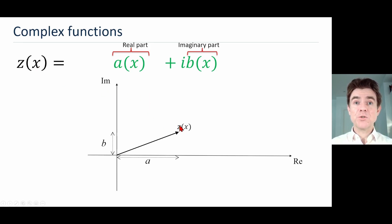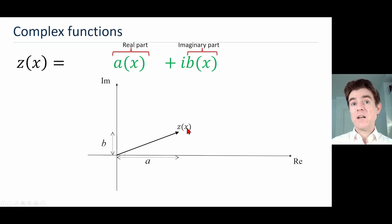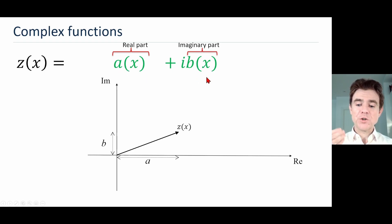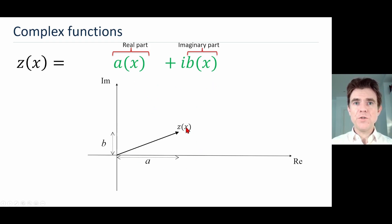That would allow us to create any trajectory on the Argand diagram — z the complex number would move around according to whatever our input value x is, and according to whatever our choice of a(x) or b(x) happens to be. I now want to focus on a very special case of choices of those functions a(x) and b(x) — a particular choice that will move this complex number around in the complex plane.